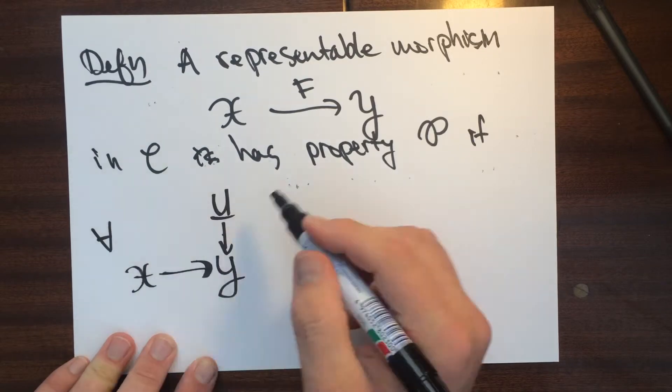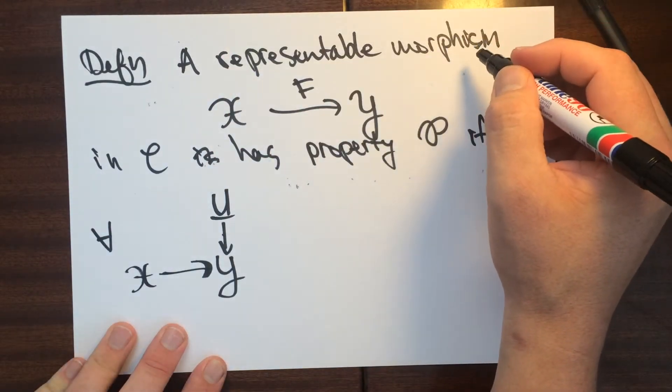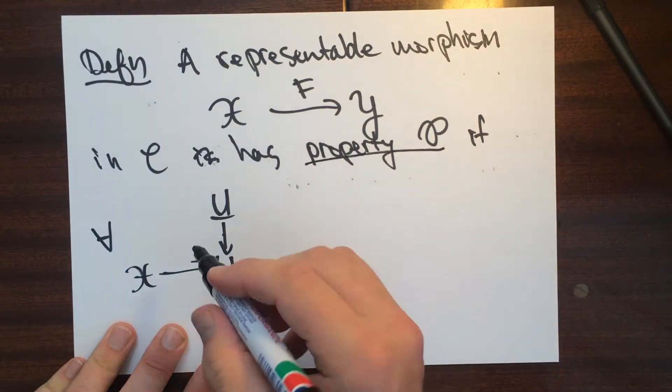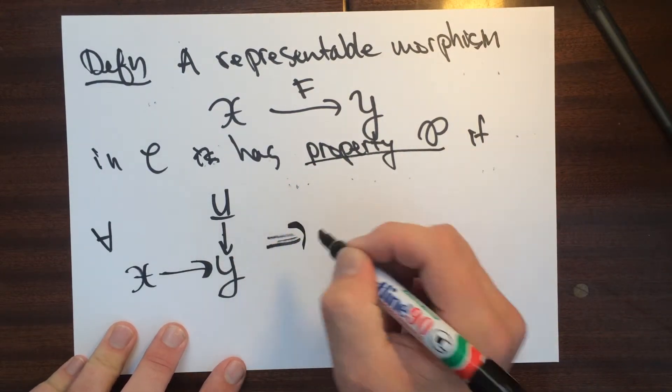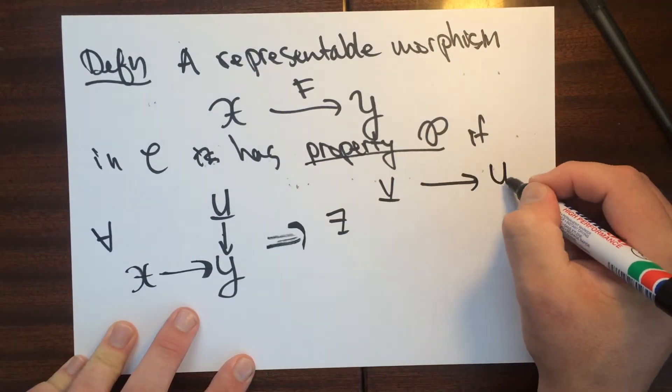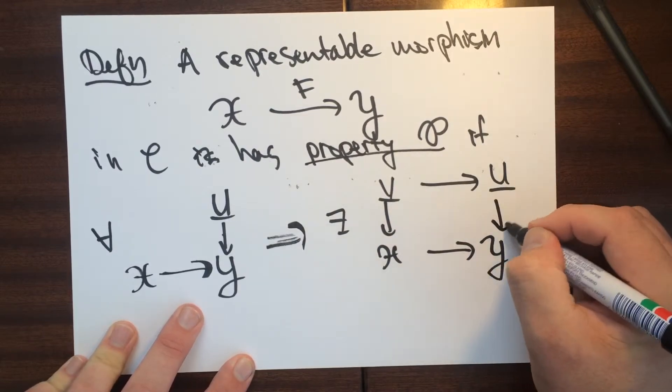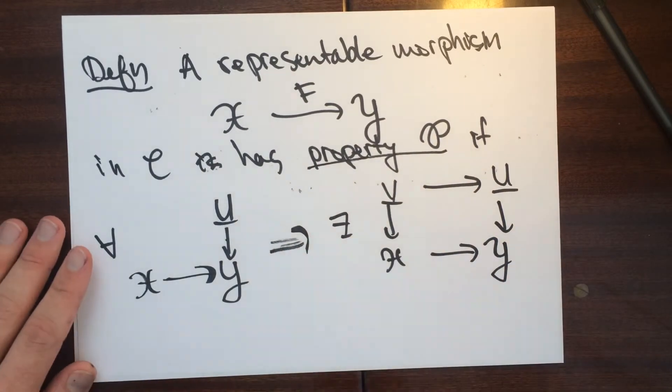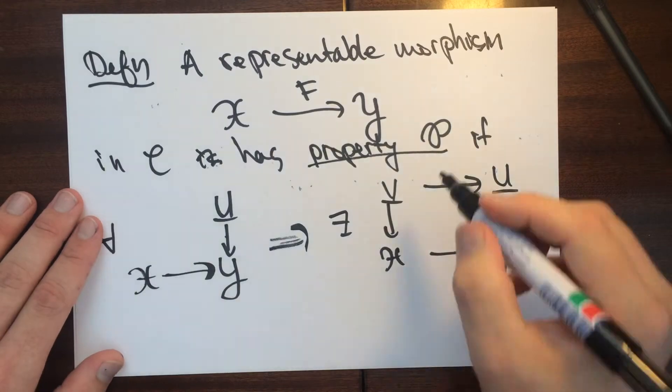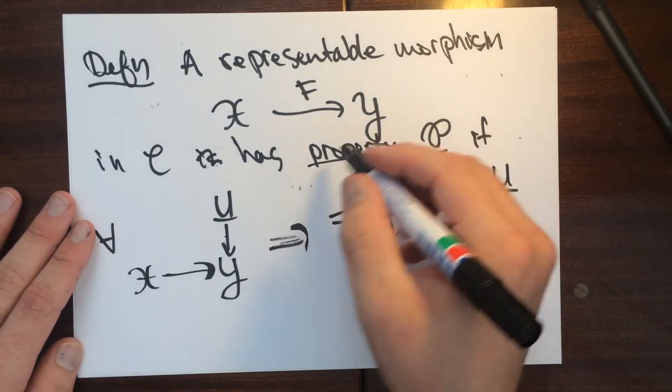So by the definition of representable, this implies that there exists one of these guys V to U, and then we have X to Y. So then there exists one of these guys, and then we can call this map here phi.